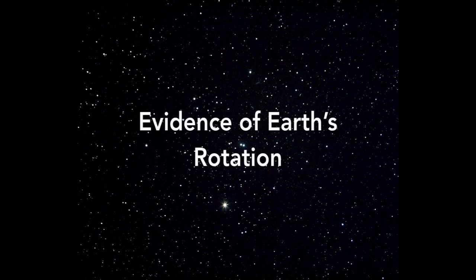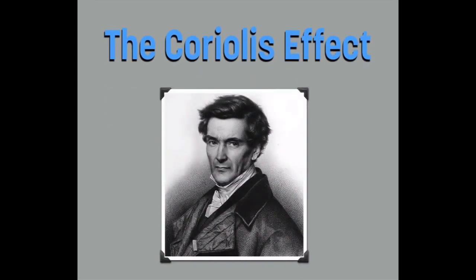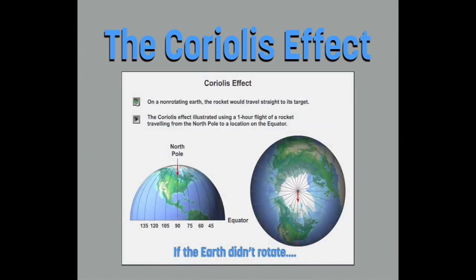Let's talk about evidence that proves that the Earth is actually a spinning sphere. The first piece of evidence is called the Coriolis effect. The Coriolis effect was discovered by Gustave Gaspar Coriolis, who used mathematics to conclude that the paths of projectiles — anything traveling over a long distance across the Earth — is going to be affected by the Earth's rotation. For example, pretend you shot a cannonball from the North Pole. If the Earth didn't rotate, that cannonball would go straight out in a straight line from where you fired it. But obviously, the Earth is rotating.